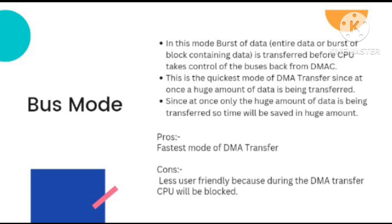Now let's focus on Burst Mode. In this mode, before the CPU takes control of the buses back from the DMAC, all the bus data is transferred. A huge amount of data is being transferred in one single time duration, making it a quick mode of DMA. It also saves time by transferring data this way. The pros of this mode is that it is the fastest mode of DMA transfer. The cons is that it is not user-friendly — when DMA is transferring, the CPU will be blocked.